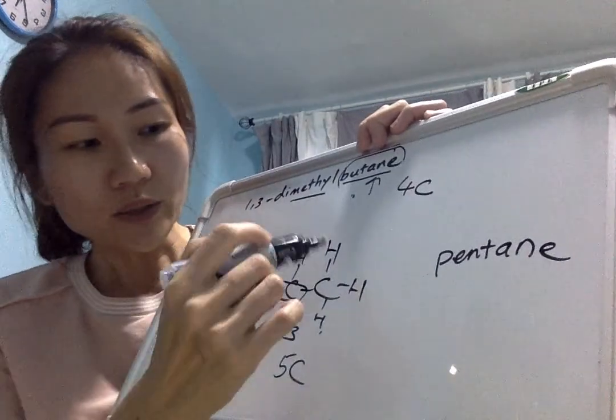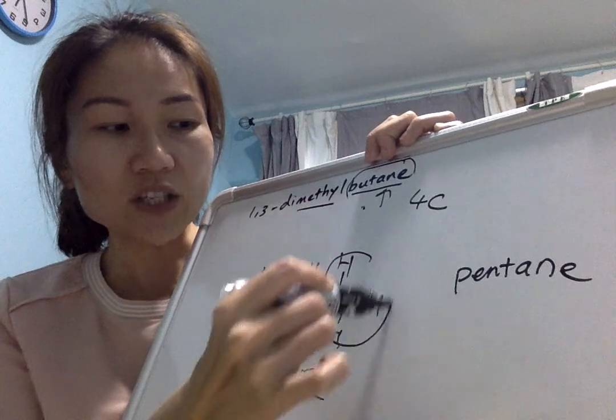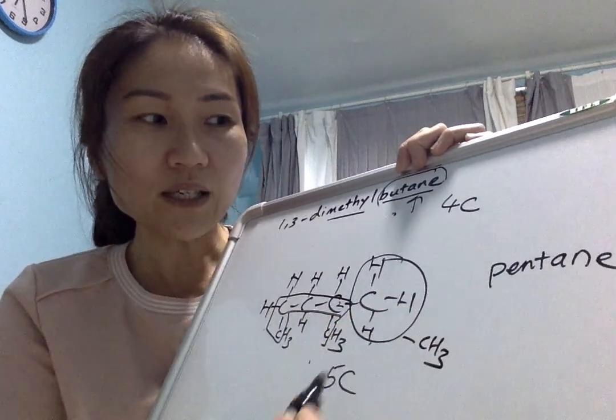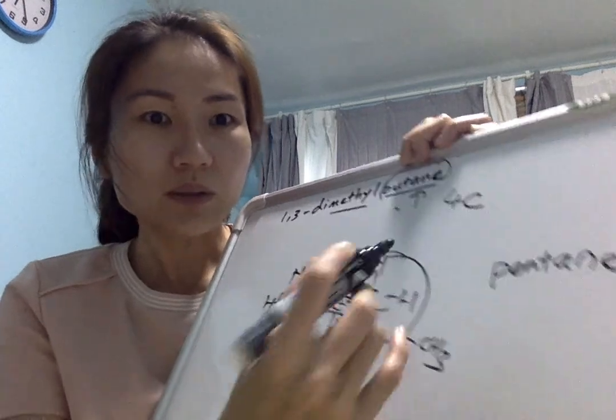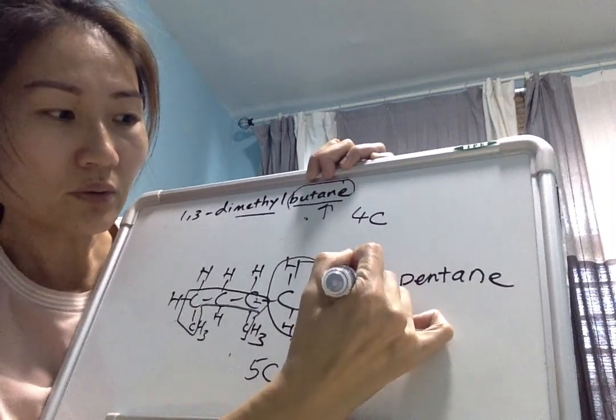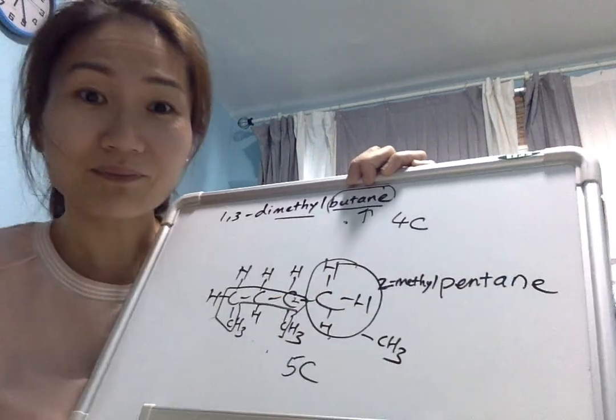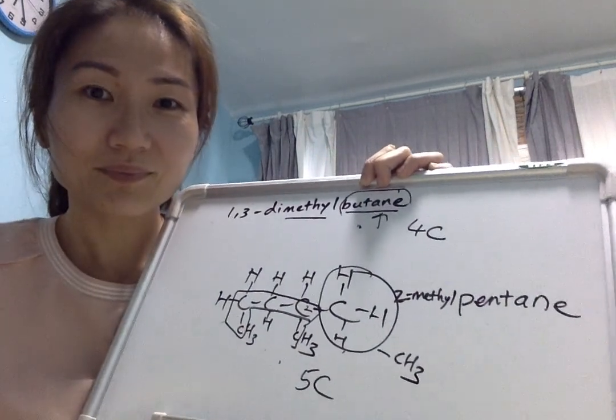And you can tell that on the second carbon there is a side chain sticking out. The side chain is a methyl group, CH3. So the correct name would be 2-methylpentane. That's it.